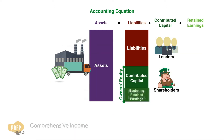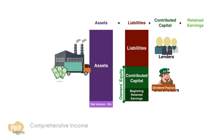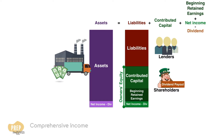For each period, the company brings in more income, which is an asset. Part of the net income is paid out to shareholders. Therefore, we would expect that the change in retained earnings for the period be equal to the net income minus the dividends paid out.